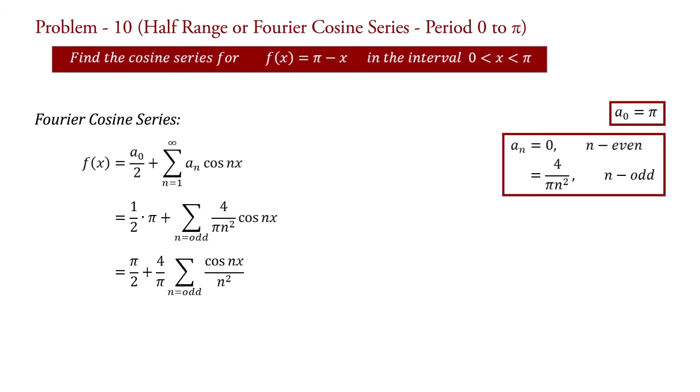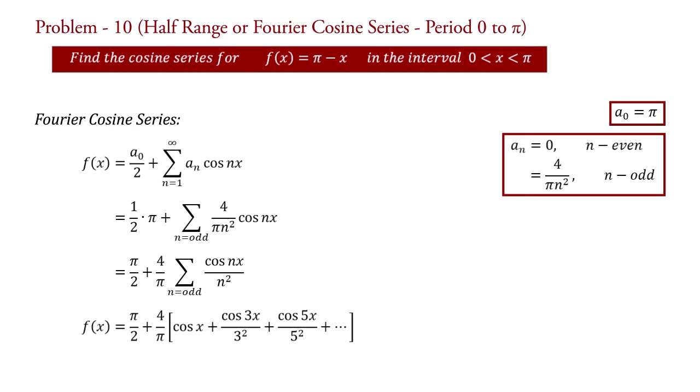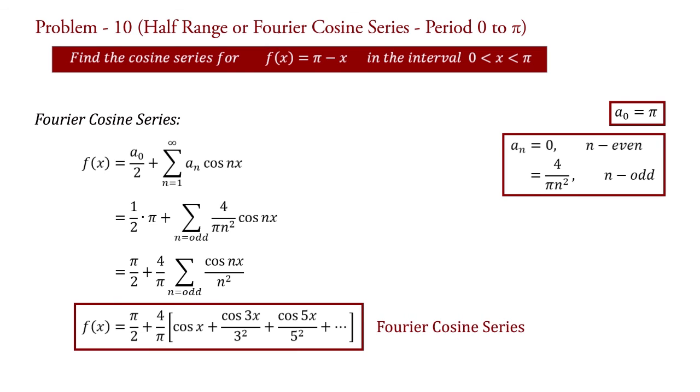In expanded form it is written as f(x) equal to pi by 2 plus 4 upon pi into bracket, taking n equal to 1, 3, 5 and so on, giving cos(x) plus cos(3x) upon 3² plus cos(5x) upon 5² plus so on. This is the required series of the function. In the next video we will solve another problem of half-range Fourier series with period 0 to pi. Please write your suggestions in the comment box, like and share this video and subscribe to my YouTube channel School of Physics. Thanks.